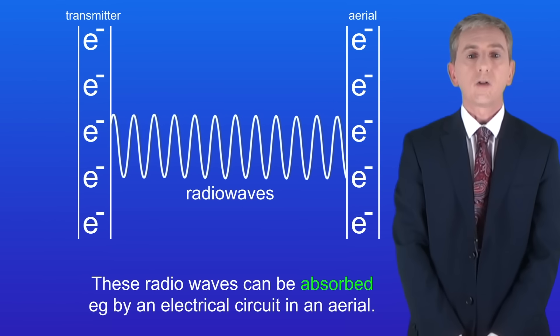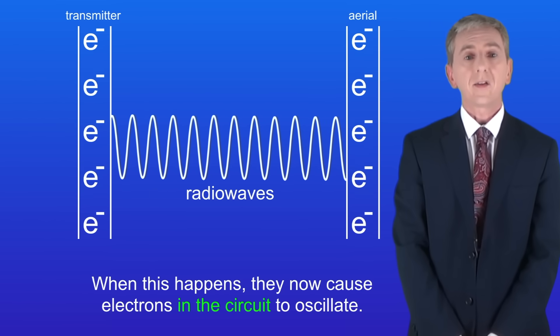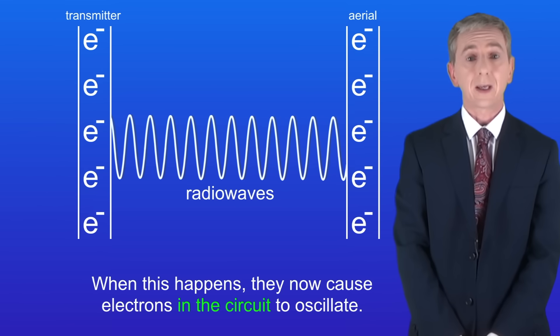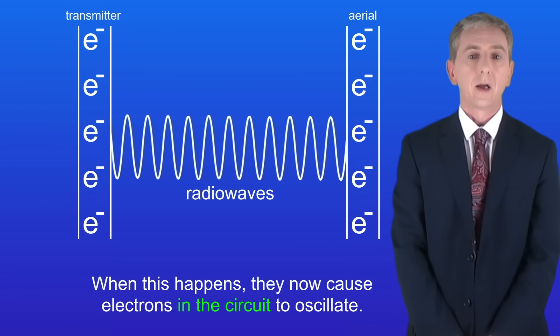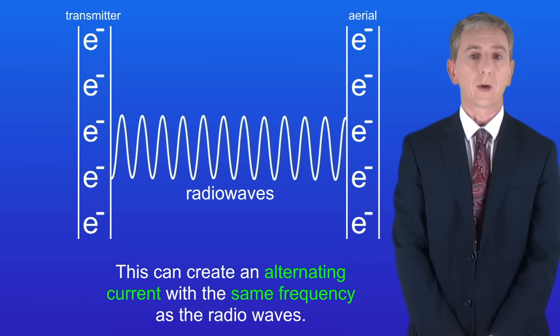Now these radio waves can be absorbed for example by an electrical circuit in an aerial and when this happens they now cause electrons in the circuit to oscillate. This can create an alternating current with the same frequency as the radio waves.